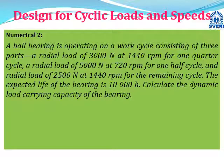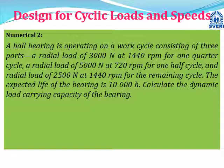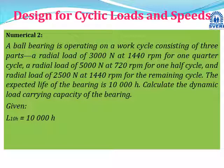Second numerical: A ball bearing operates on a work cycle with three parts — radial load 3000 N at 1440 rpm for one quarter cycle; radial load 5000 N at 720 rpm for one half cycle; and radial load 2500 N at 1440 rpm for remaining one quarter cycle. The expected life is 10,000 hours. Calculate the dynamic load carrying capacity. Here, life in hours is given and we must find C.